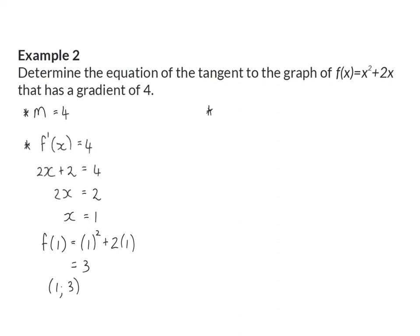Lastly, we can determine the y-intercept, because we already know that the equation is y is equal to 4x plus c. We have our point of contact, so we substitute y with 3 and x with 1, and then we calculate our c value as minus 1. The equation of this tangent at the point x is 1 is then y is equal to 4x minus 1.